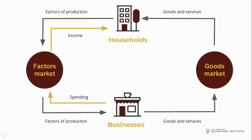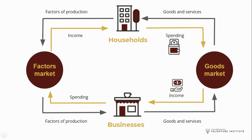Households need goods and services to satisfy their wants and needs, so they will spend money to purchase the goods and services provided by businesses. The money that they spend becomes an income for businesses. Some textbooks will also refer to this as revenue.